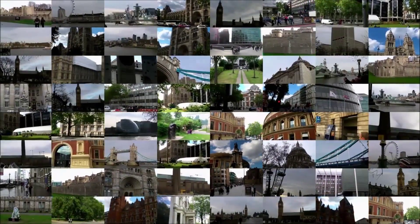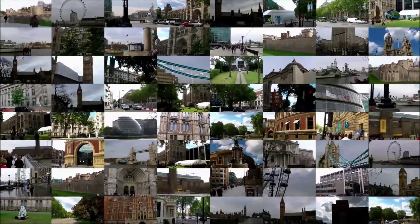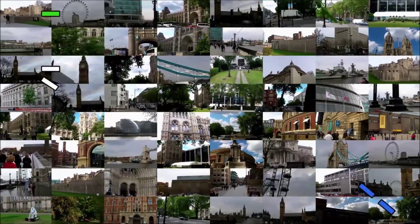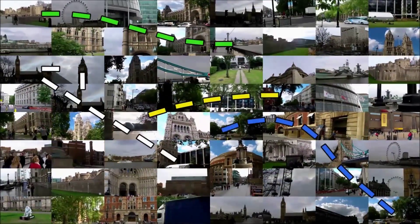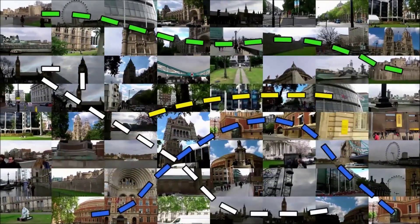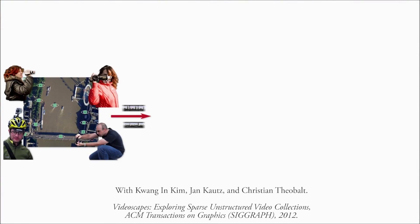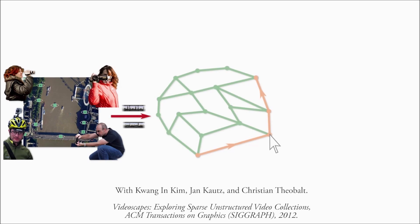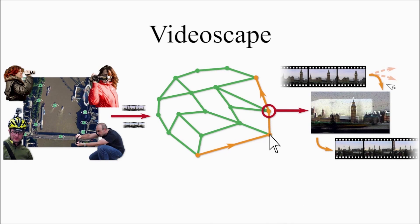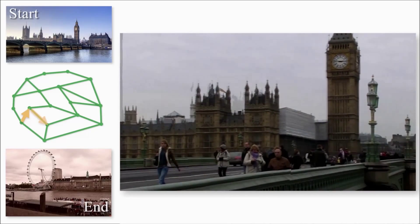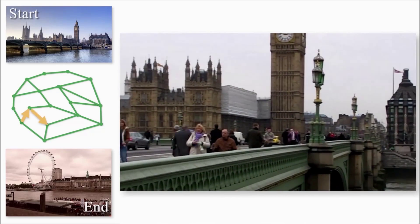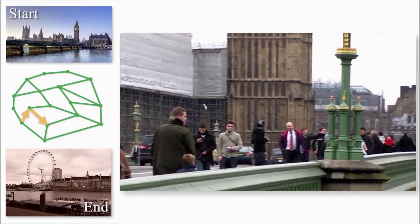Finding connections between media can also help us edit and explore. Take this database of videos of a city — finding the visual connections between scenes can help us make sense of the space. We can automatically build a graph of the relations within the database, then explore this graph interactively.